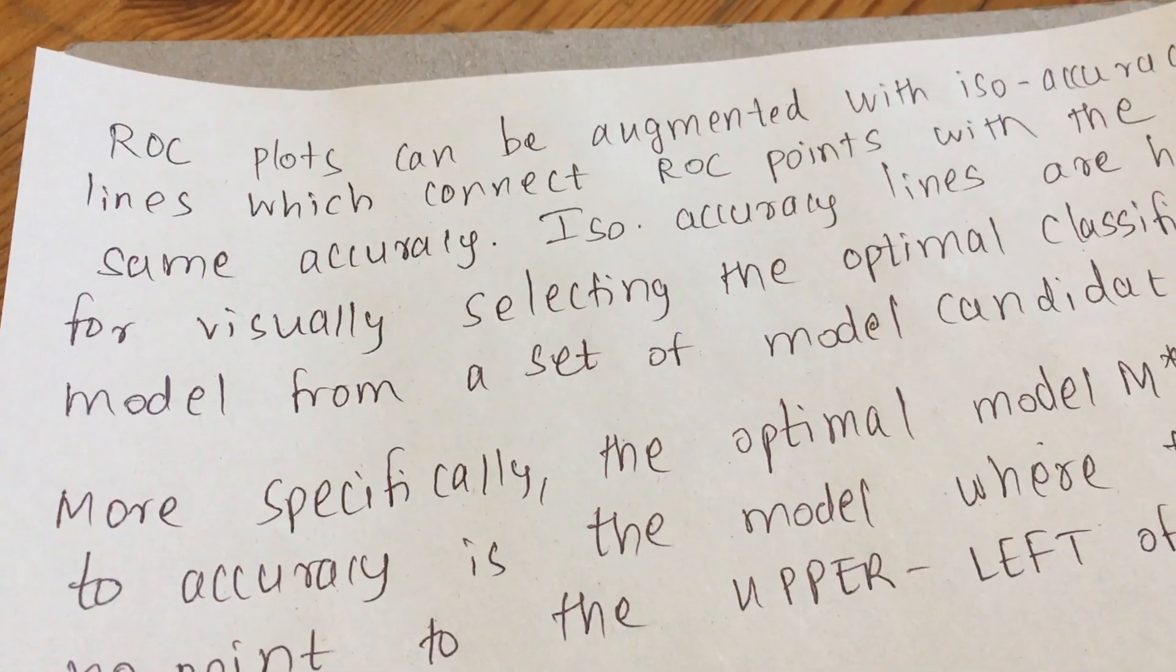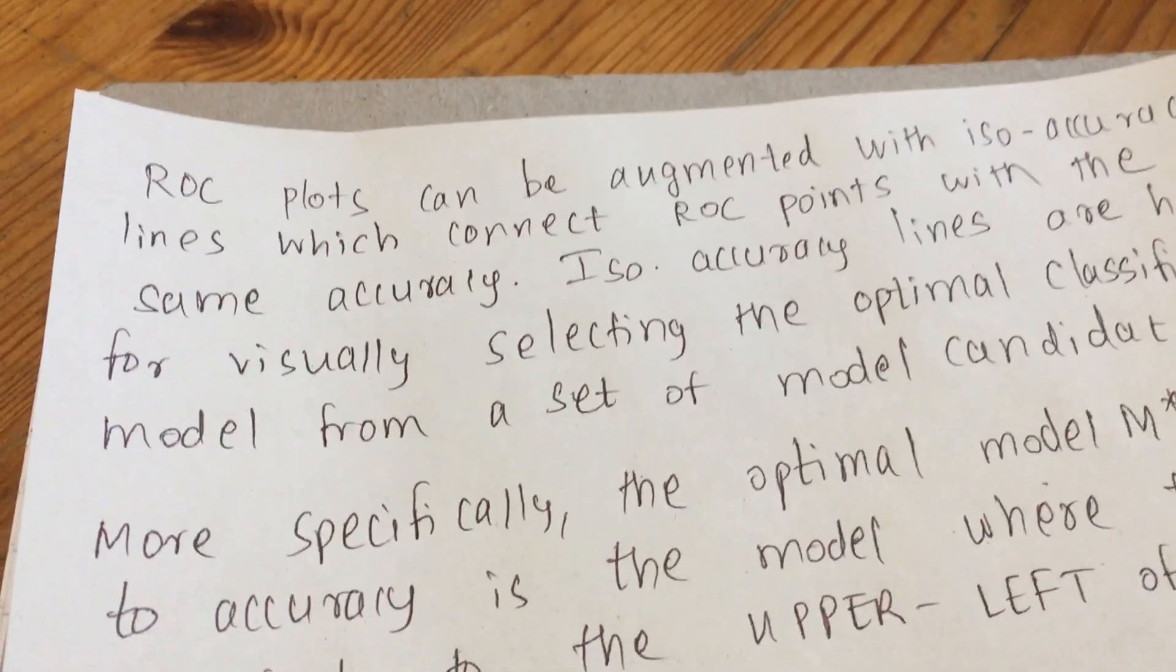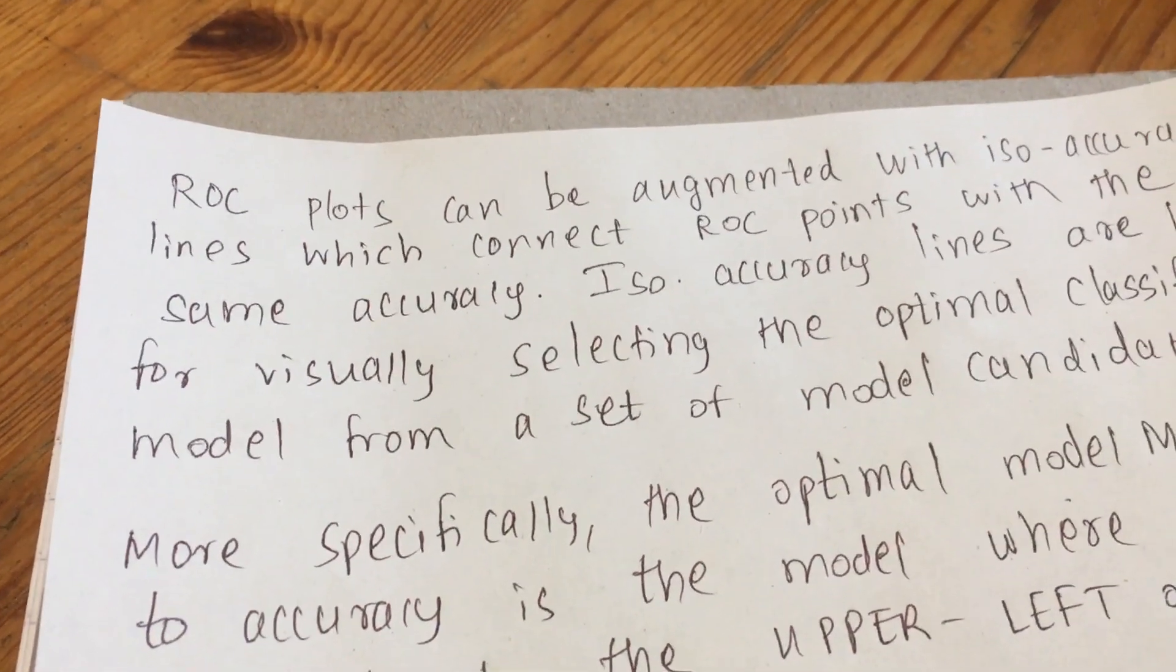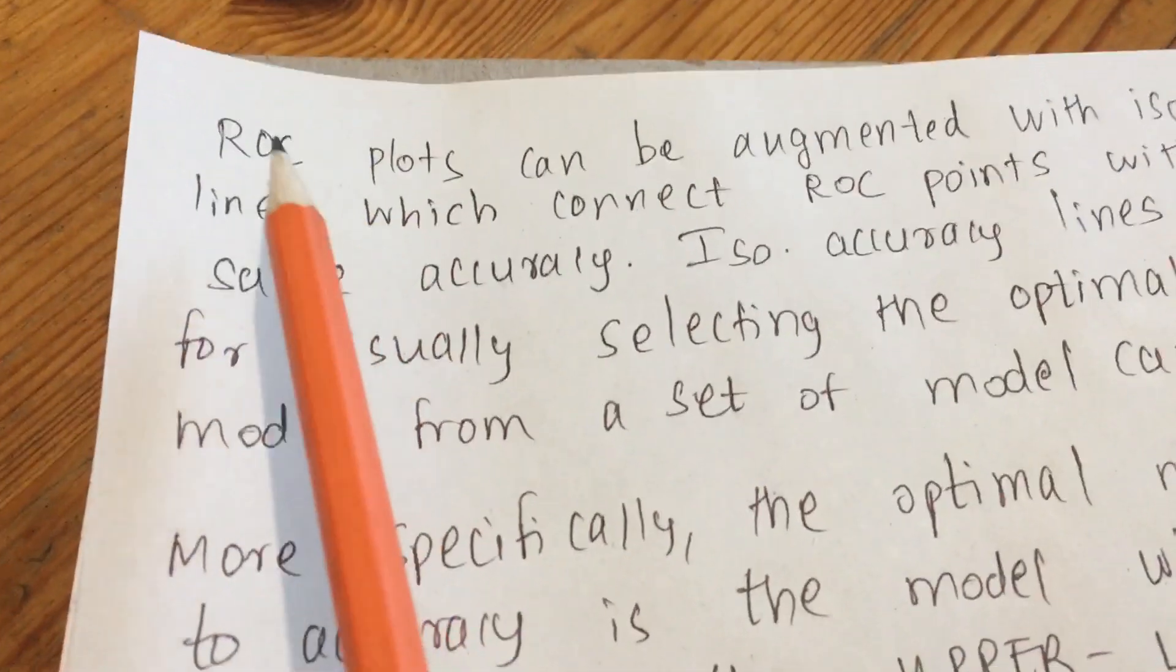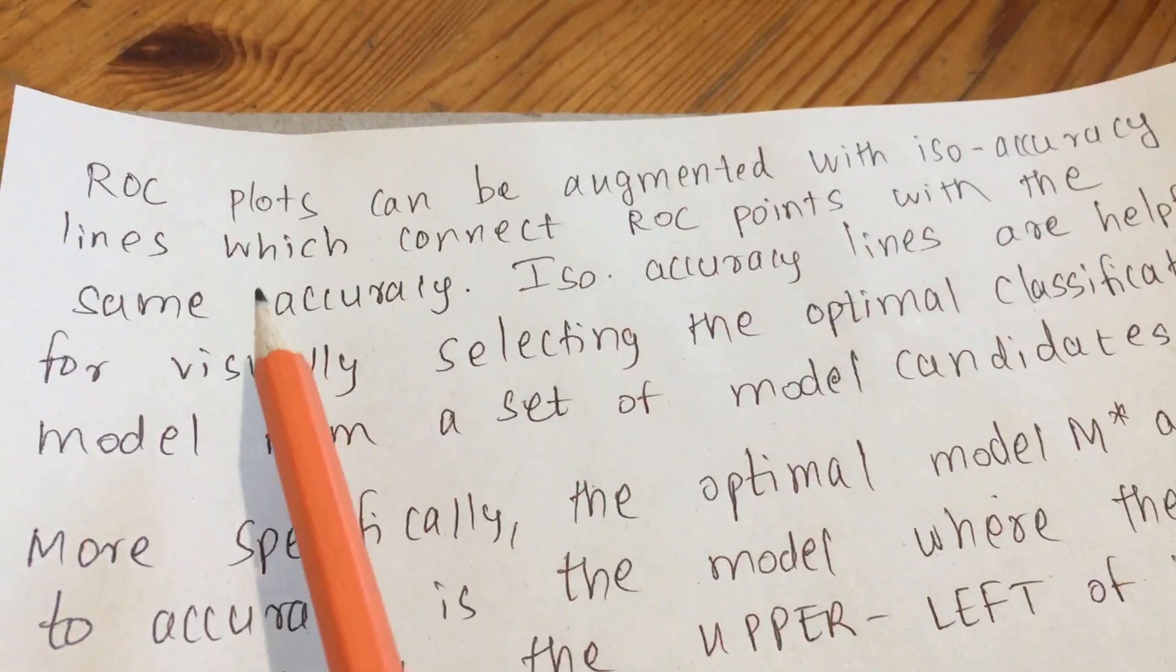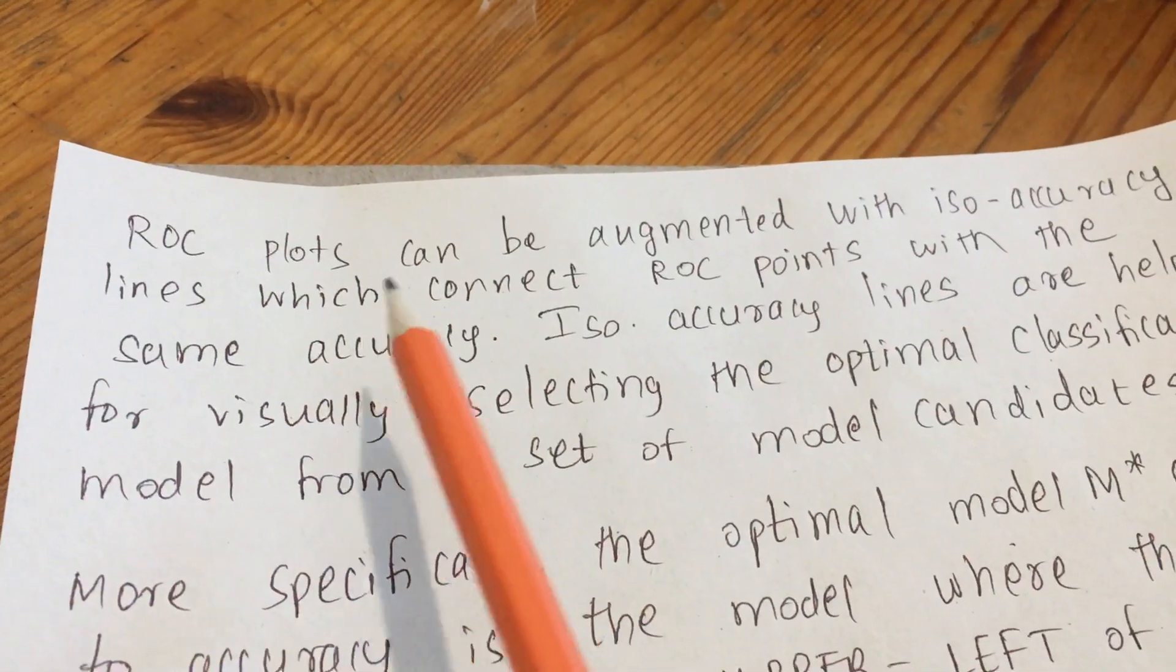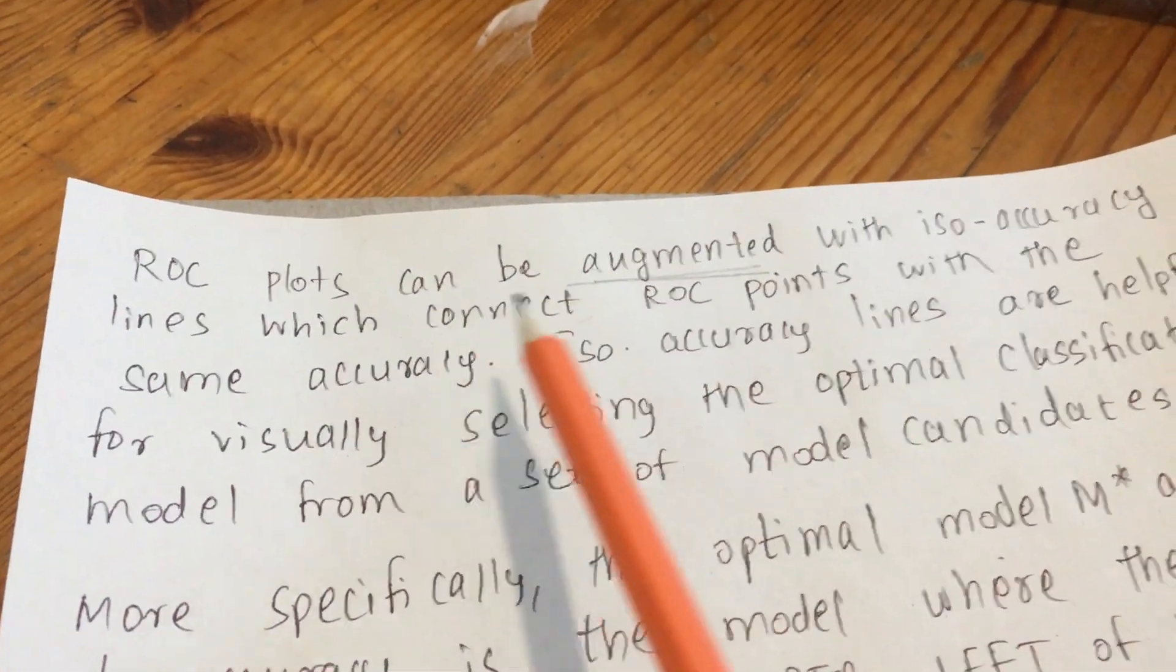Basically, iso-accuracy lines are used as an alternative or an improved version of the ROC curves in order to deal with class skew or class imbalance. We'll understand the iso-accuracy lines concept with the help of an example. Before that, let's read some of the pointers. ROC plots can be augmented with iso-accuracy lines which connect the ROC points with the same accuracy. It's just an augmented function, so you can have a more improved version of the ROC.